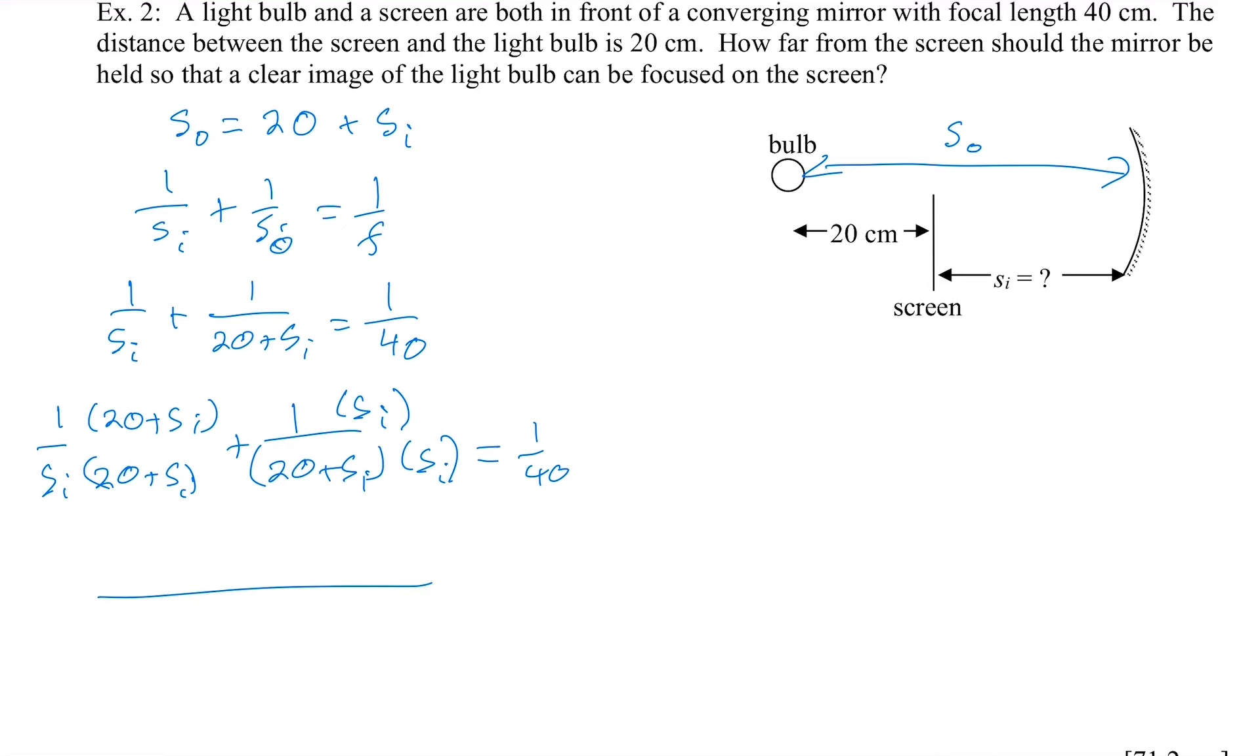This gives a common denominator of SI times 20 plus SI. So, that's 20 SI plus SI squared. That's the denominator. And if I look at the numerators, I have 20 plus SI plus SI again. So, that's just 20 plus 2 SI. And that's equal to 1 over 40.